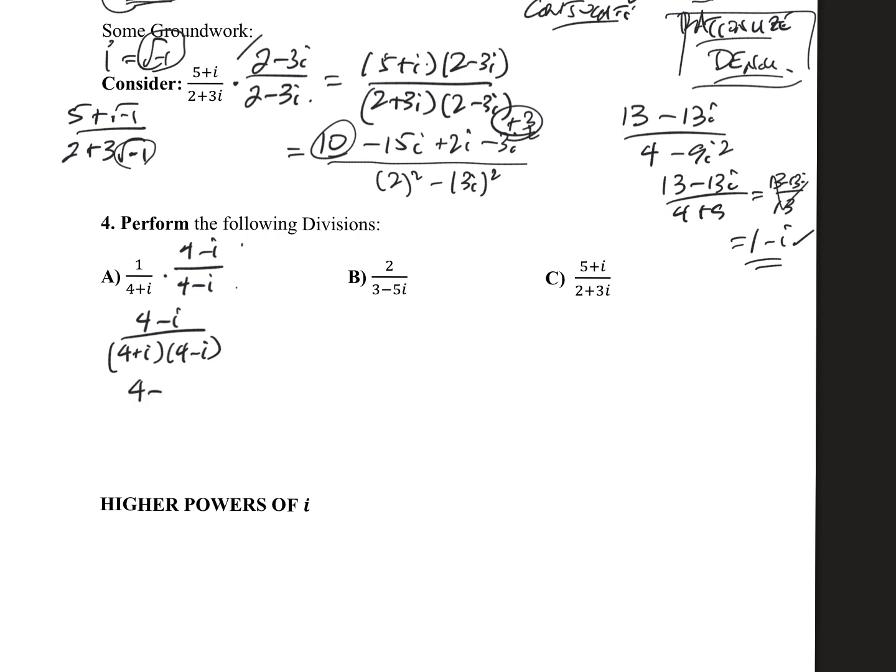The top is going to remain what it is. Again, I'm going to utilize the difference of square property. And so we end up with 4 minus i, 16 minus i squared. And since i squared is negative 1, we end up with 4 minus i all over 17.